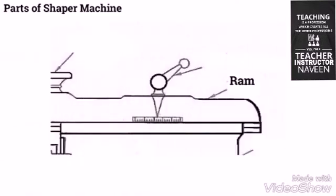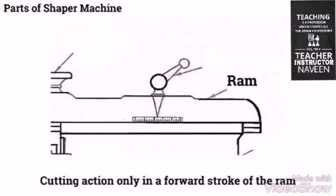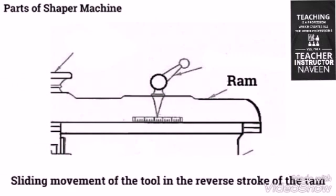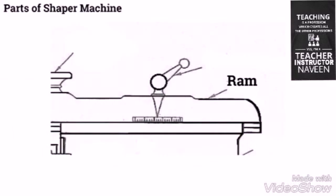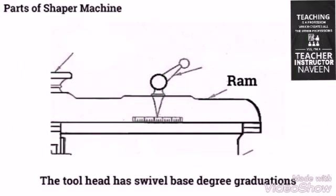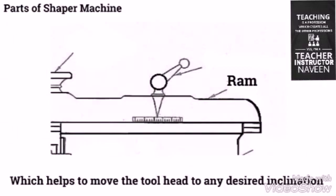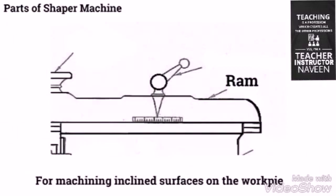The RAM reciprocates on the column guideways and carries the tool head with a single point cutting tool. The tool head is in the clapper box, which causes cutting action only in the forward stroke of the RAM and sliding movement of the tool in the reverse stroke. The depth of cut or feed of the tool is given by a down feed screw. The tool head has swivel base degree graduations, which helps to move the tool head to any desired inclination for machining inclined surfaces on the workpieces.